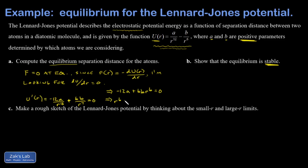And I'm going to solve for R to the 6. And I get 12A over 6B, which is 2A over B. And then I have to take the sixth root. So R equilibrium is going to be the sixth root of 2A over B.